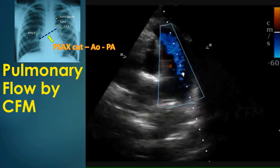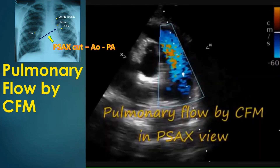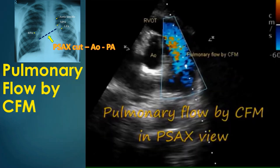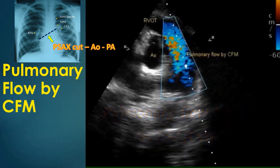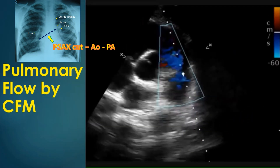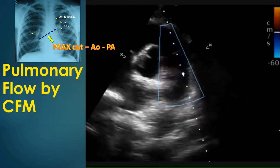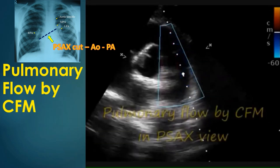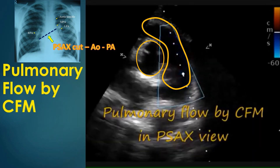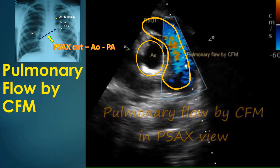Parasternal short axis view showing right ventricular outflow tract, pulmonary artery and aorta. The right ventricular outflow tract and pulmonary artery are seen curving around the aorta to form the circle and sausage appearance.